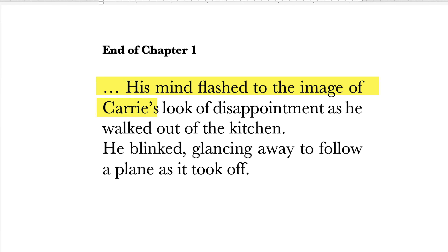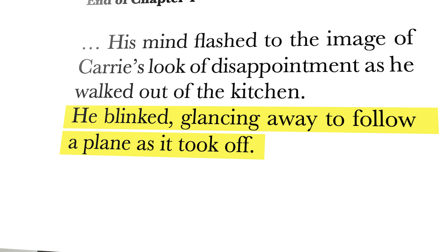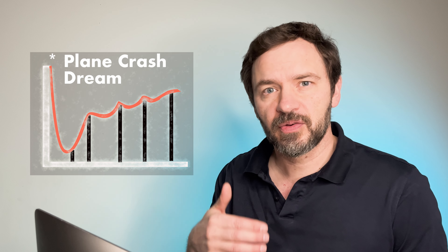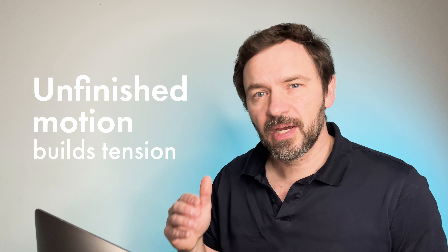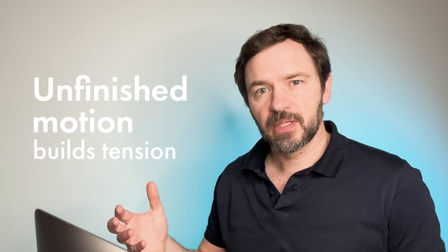Let's read the first chapter ending: 'His mind flashed to the image of Kerry's look of disappointment as he walked out of the kitchen. He blinked, glancing away to follow a plane as it took off.' What I love about that is because in the prologue she sets up the dream sequence of a plane crash, and at the end of chapter one she gets the reader to focus on the plane going up in the air. So now I'm starting to feel suspense — is that dream real? Is it going to happen with that plane taking off? That's a nice unfinished motion to get me wanting to read the next chapter.